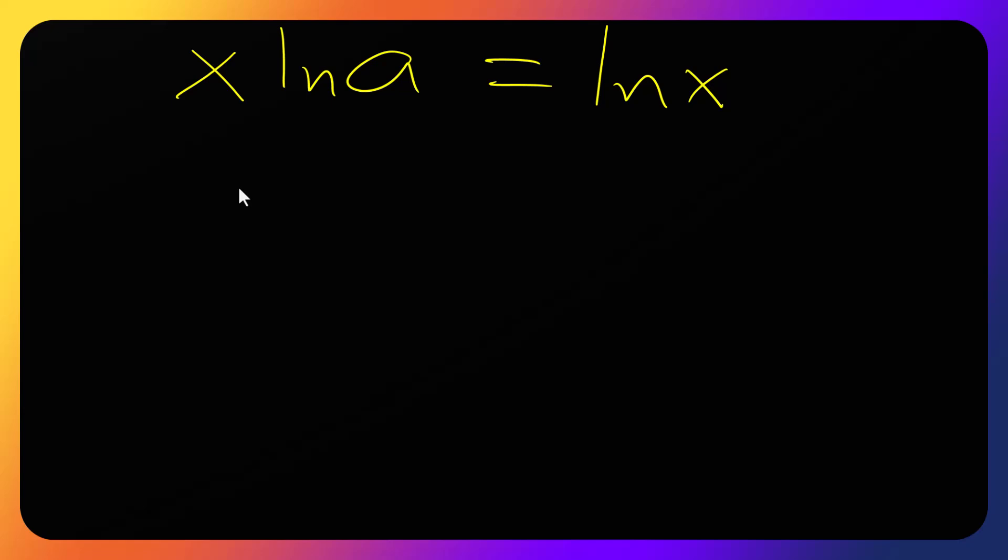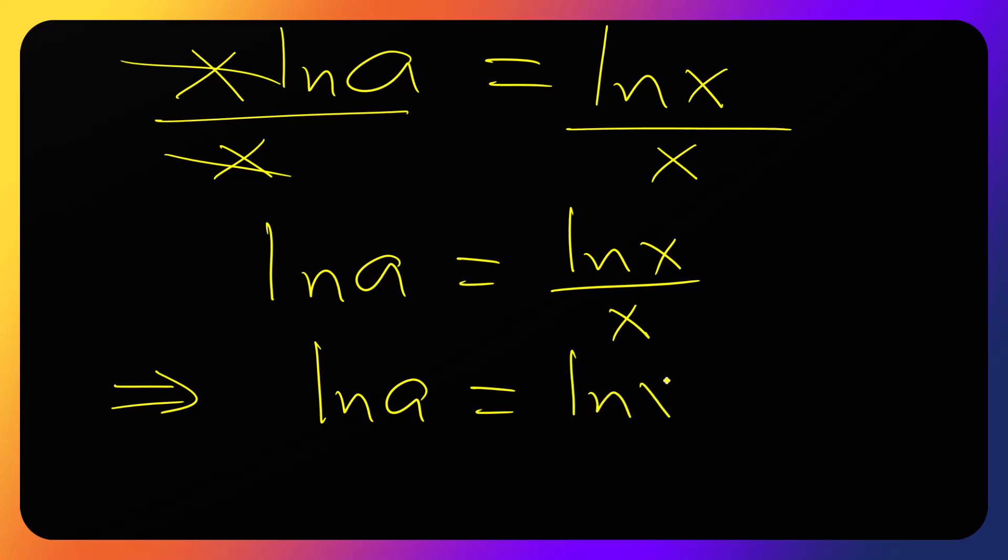All right, so let's divide both sides by x. So this one will go, so we have ln of a equals to ln of x over x. Now let me write the right hand side in the linear form, so that ln of a equals to ln of x times x to the power minus one.